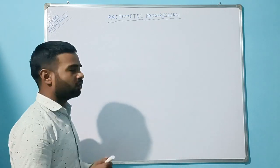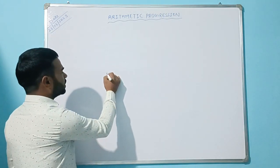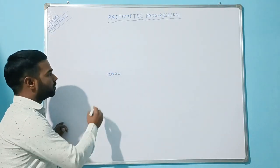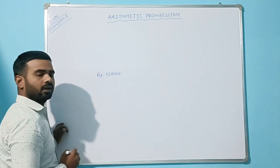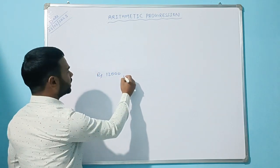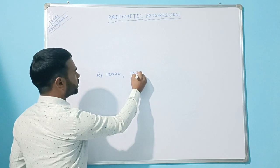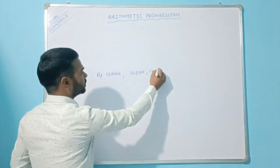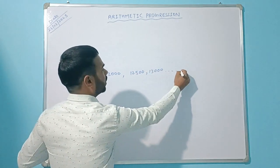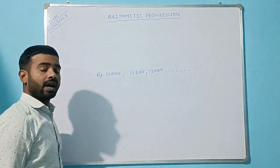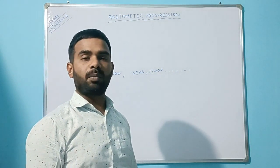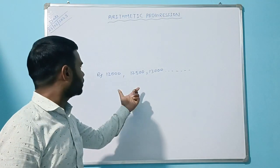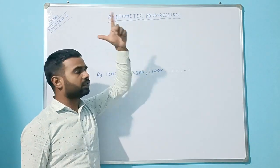He starts calculating. In the first year he got rupees 12,000, in the second year rupees 12,500, then 13,000, and so on. He starts thinking: after how many years will I get a salary of rupees 20,000? That is what I am going to correlate with this chapter — Arithmetic Progression.